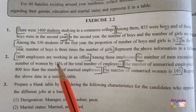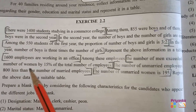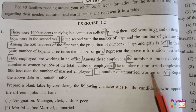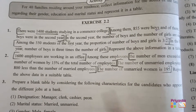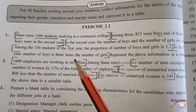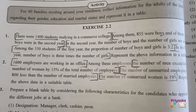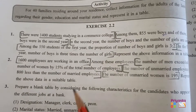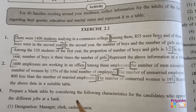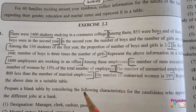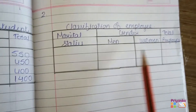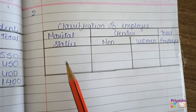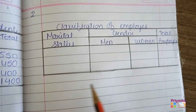Second question: 1600 employees are working in an office. Among these employees the number of men exceeded the number of women by 15% of the total number of employees. The number of unmarried employees is 800 less than the number of married employees. The number of unmarried women is 197. Represent the above data in a suitable table. Here they are talking about the gender of men and women and their marital status — so there are two attributes: marital status and gender. The gender has been kept in two separate columns — men and women — and marital status as married and unmarried.